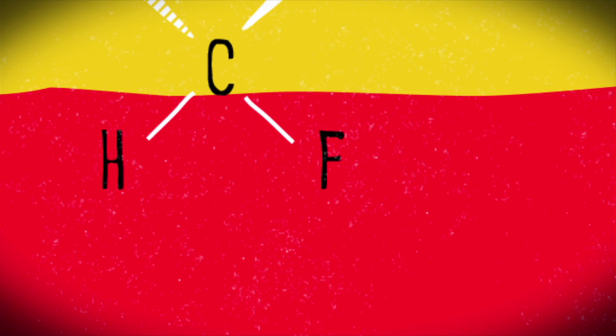Take a look at the two molecules you see here. Each one is characterized by a central tetrahedral carbon atom bound to four different atoms: bromine, chlorine, fluorine, and hydrogen.